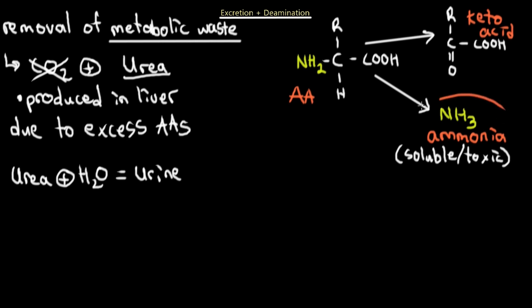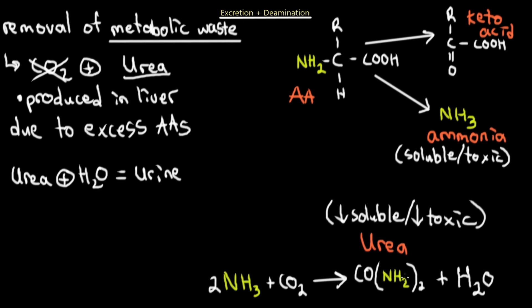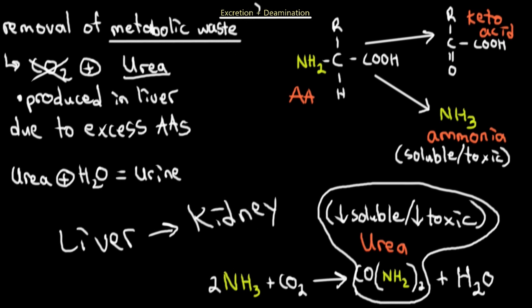Since ammonia is extremely soluble and toxic, we must transform it into something more tolerable. In the liver, ammonia combines with carbon dioxide to form urea and water. Urea is less soluble and less toxic, so it can be safely transported from the liver to the kidneys in our blood and excreted through the filtering of the kidney.